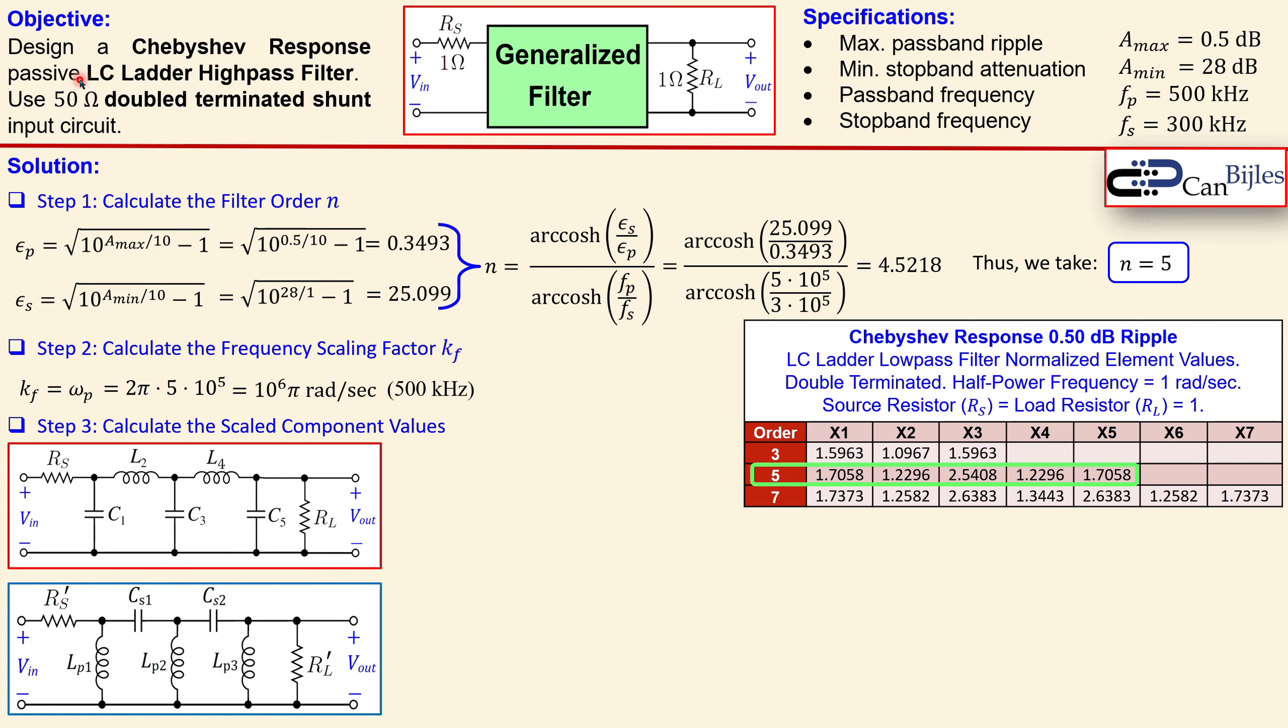The formulas for lp1, lp2, lp3 and the others are now described. We have lp1 equal to km over kf times divided by c1. C1 is from the table and km is 50 and this we just set in step two. Now you calculate, you get 9.33 microhenry. This cs1 which is related to l2 value here which is 1.2296, again the km and the kf we use it, and you get now 5.177 nanofarads.